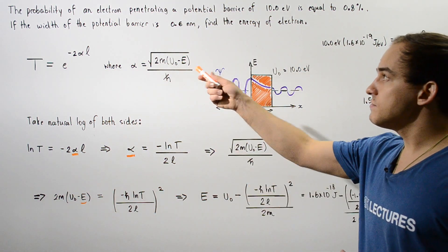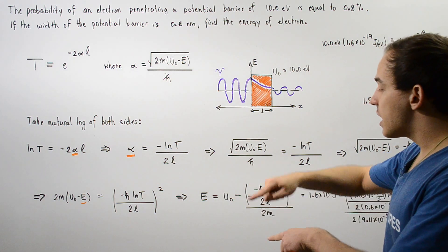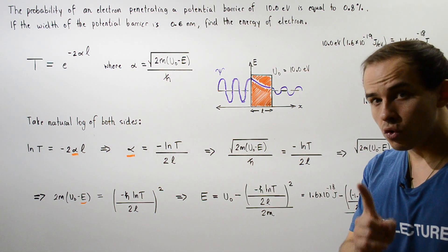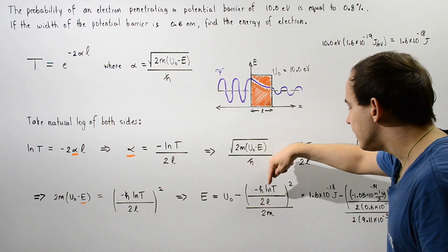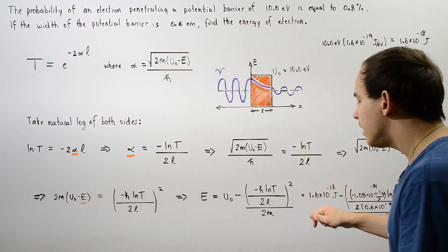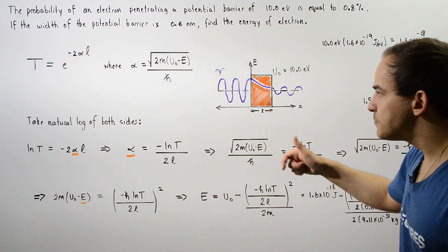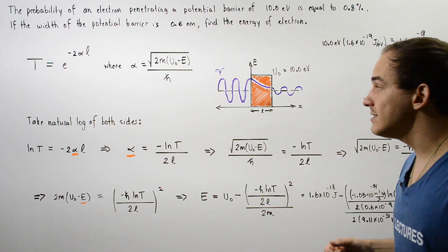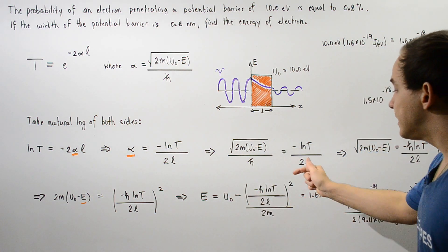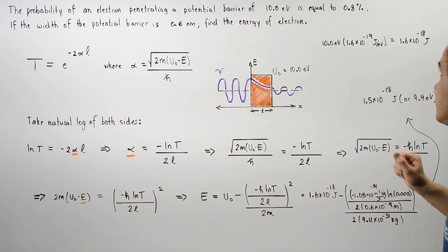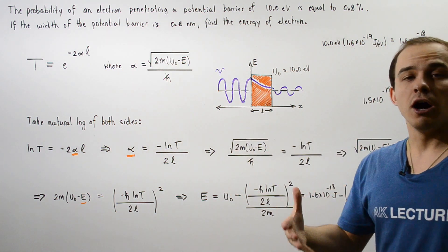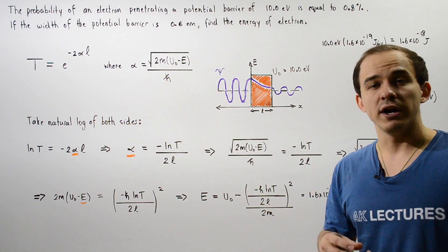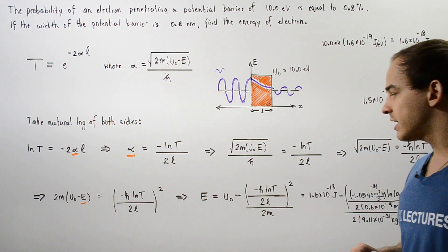The energy of that electron is equal to U0, the height of the potential barrier given in Joules minus the square of negative H bar ln T divided by 2L divided by 2M. Where H bar is a constant, T is the transmission coefficient. To get the transmission coefficient, we take our percentage and divide that by 100. L is the width of the barrier and M is the mass of our electron 9.11 times 10 to negative 31 kilograms.